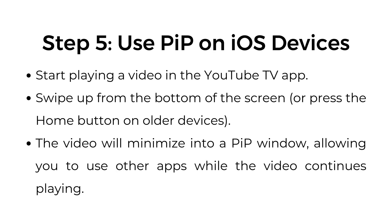Step number five: use picture-in-picture on iOS devices. Start playing a video on the YouTube TV app. Swipe up from the bottom of the screen, or press the home button on older devices. The video will minimize into a picture-in-picture window, allowing you to use other apps while the video continues playing.